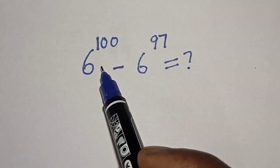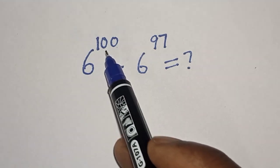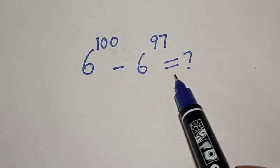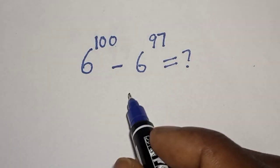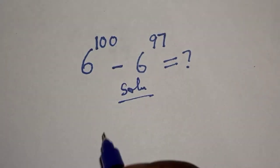Hello, welcome to math.js. In this class we want to simplify this nice math problem: 6 to the power of 100 minus 6 to the power of 97 is equal to what. Like, share, comment and subscribe.